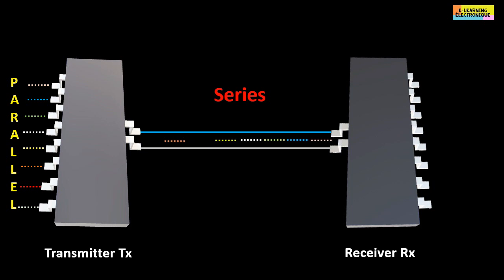In order to limit the number of cables between the transmitter and the receiver, the data will be transformed from parallel data to serial data. The receiver will perform the reverse operation, i.e. it will transform the serial data into parallel data so that each sub-pixel of the LCD display receives its own digital value.